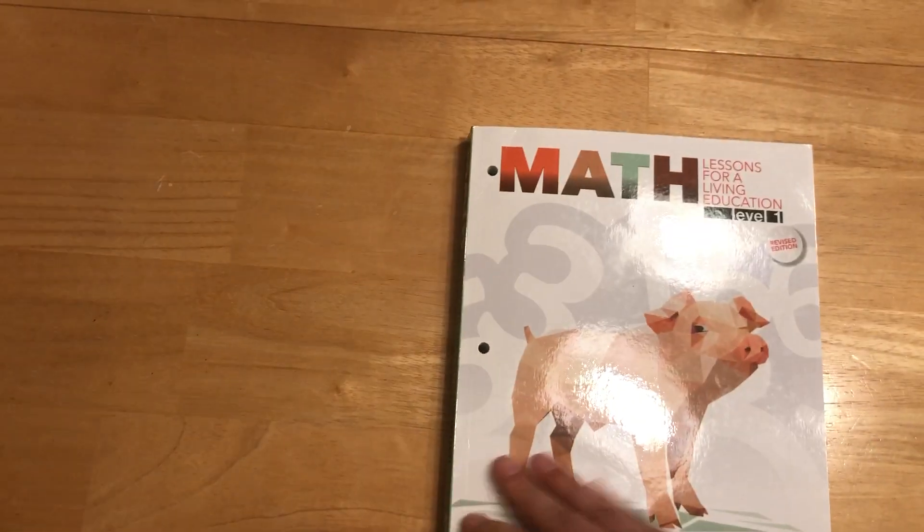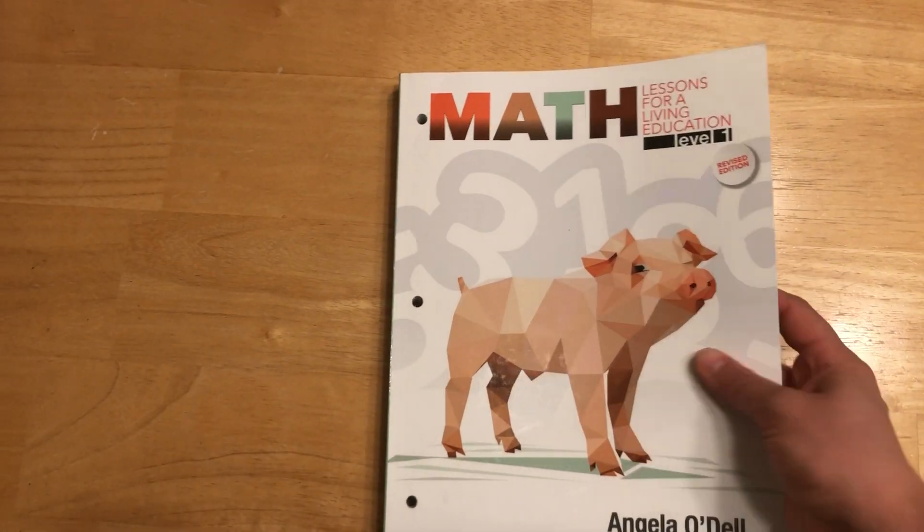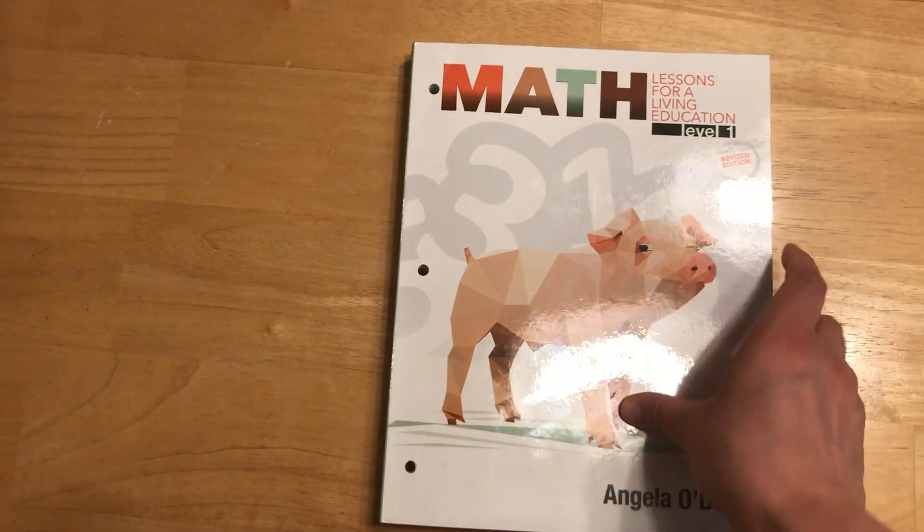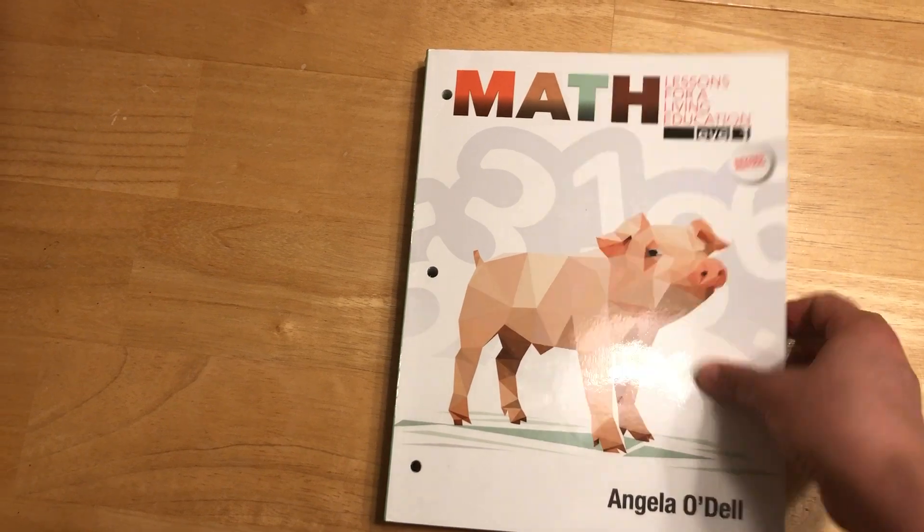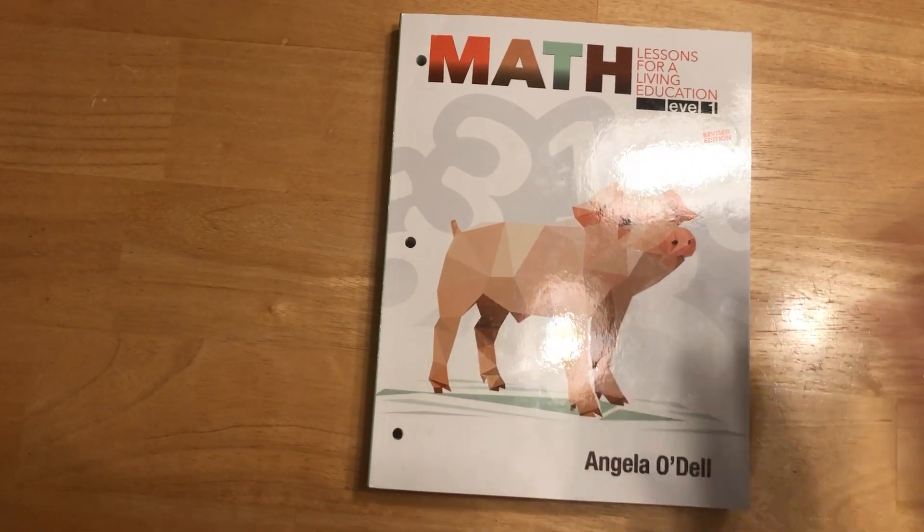That is a flip through of Math Lessons for a Living Education Level 1. Like I said, I got mine from Amazon. It's also on Master Books and probably other places too, but I hope that was helpful to see what was in it.